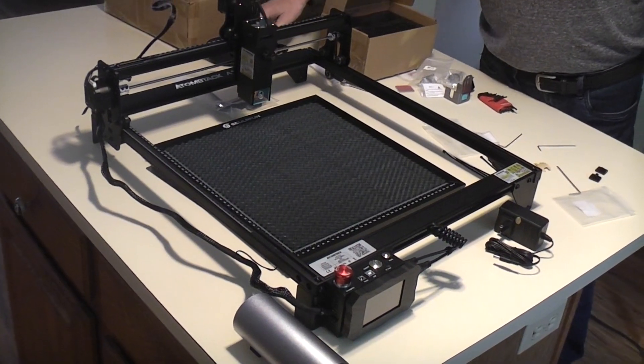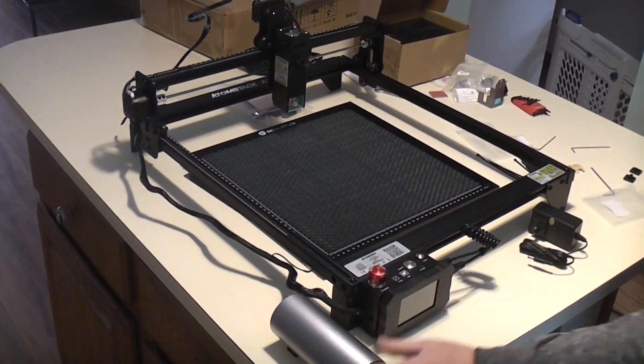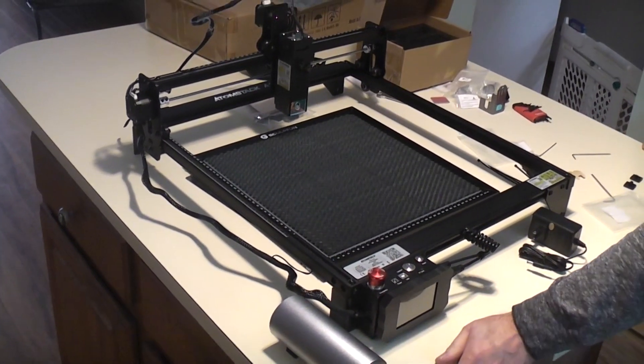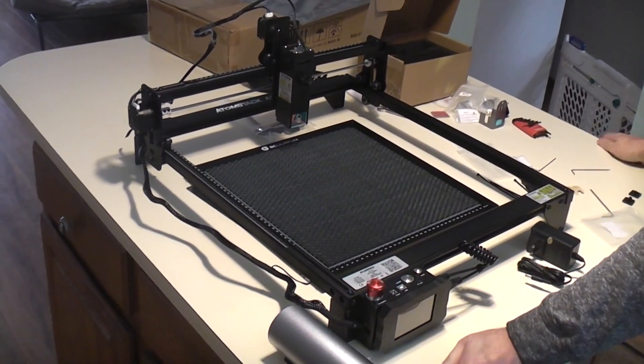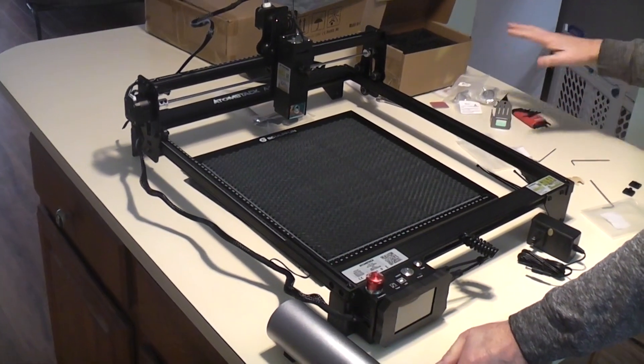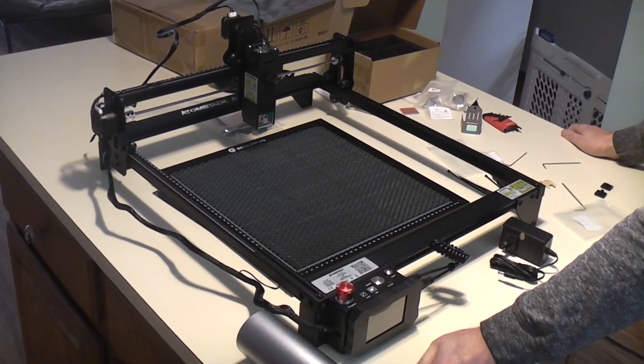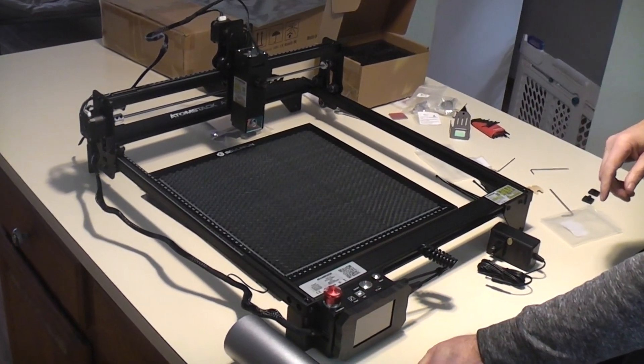So I think that's it for the extras. Get the glasses, get the air assist, showed you how to assemble the air guide. And if you have a different laser module than the M50, which is this one, then you'll know which ones of the other devices to use. And I think since I don't know where I laid the silicon rubber tube, I think that's about it for now.